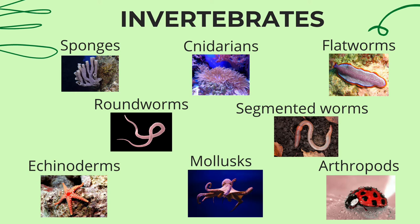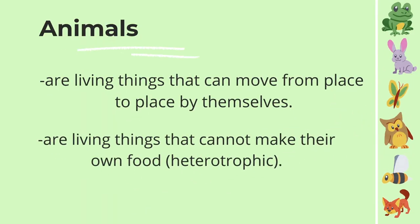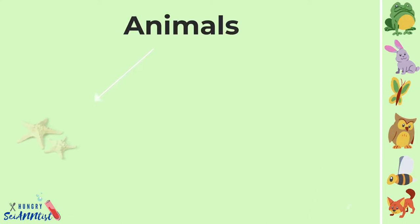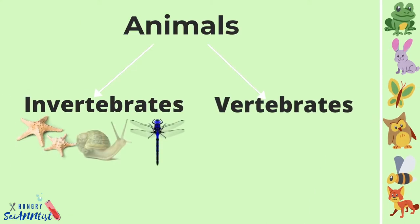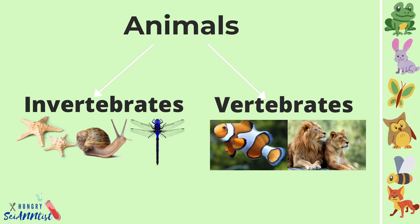In this video, we will learn about invertebrates. Animals are living things that can move from place to place by themselves. They cannot make their own food, so they need to feed on other living things. Animals are divided into two groups: invertebrates and vertebrates.